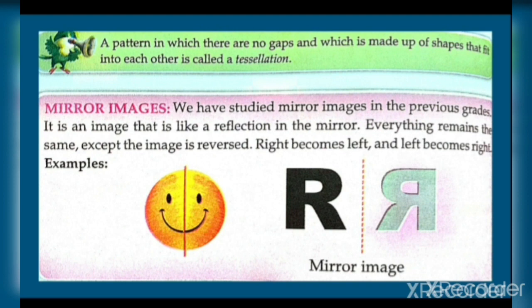Mirror images: we have studied mirror images in the previous grade. It is an image that is like a reflection in the mirror — everything remains the same except the image is reversed: right becomes left and left becomes right. Jaise koi cheez mirror mein rakhein toh jo cheez right se start ho rahi ho, mirror mein left se start hogi — yeh hota hai mirror image.